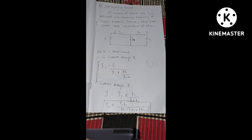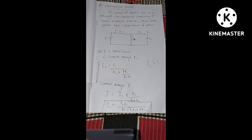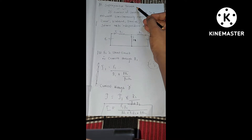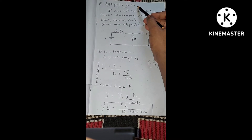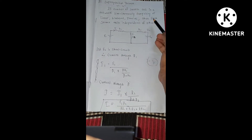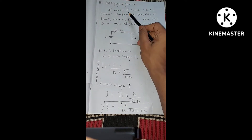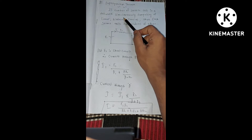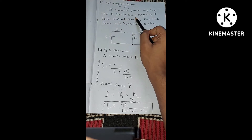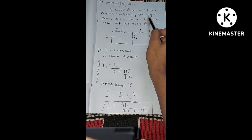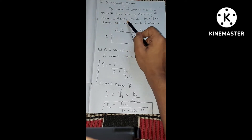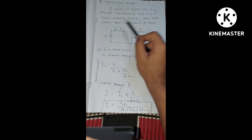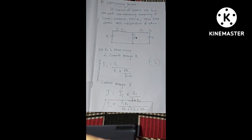Welcome to Machaut electrical engineering channel. The next theorem, which comes for 5 marks, is the Superposition Theorem. It states that if a number of sources act in a network simultaneously comprising of linear bilateral passive elements, then each source acts independent of the other.